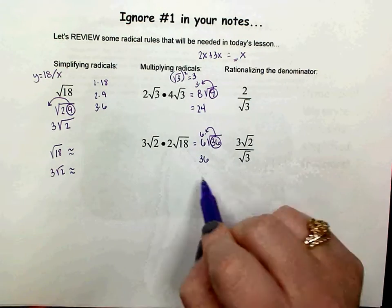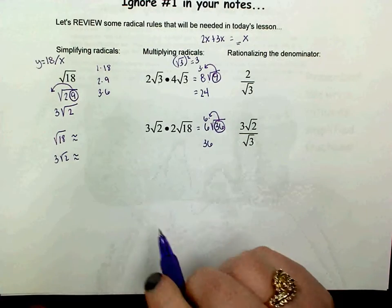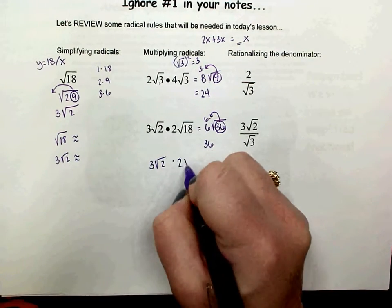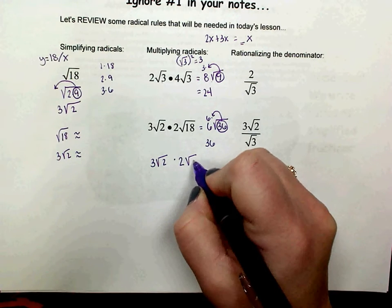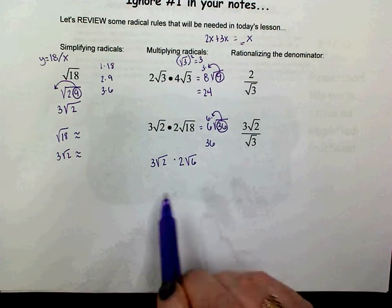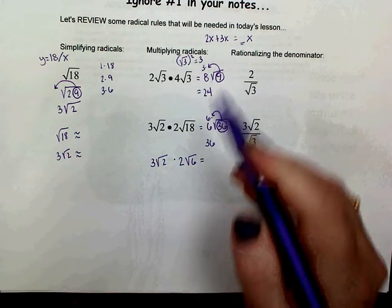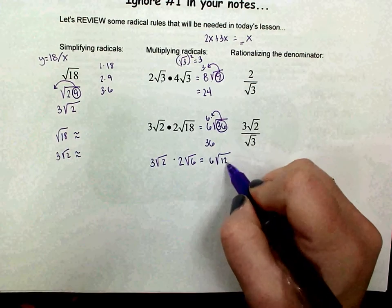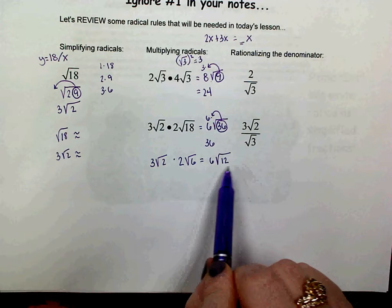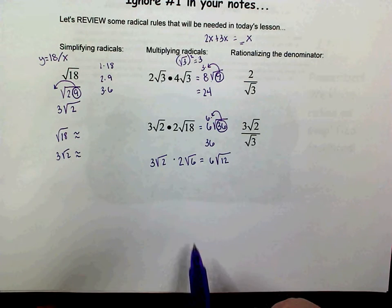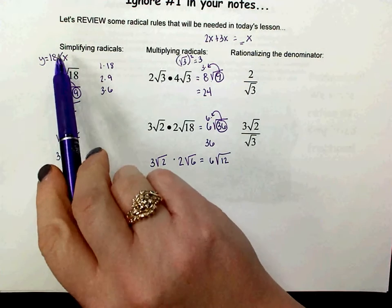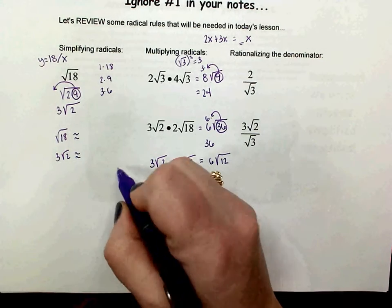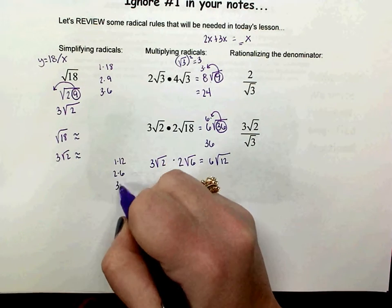Every time you multiply, it's not going to just do away with the radical. For example, if I gave you 3 square roots of 2 times 2 square roots of 6, we would go through the same process. 3 times 2 is 6, and underneath the radicals, 2 times 6 is 12. Well, 12 is not a perfect square, but it's also not completely simplified. If you went through this process and put a 12 right here, you could list all the numbers that multiply to get 12: 1 times 12, 2 times 6, and 3 times 4.